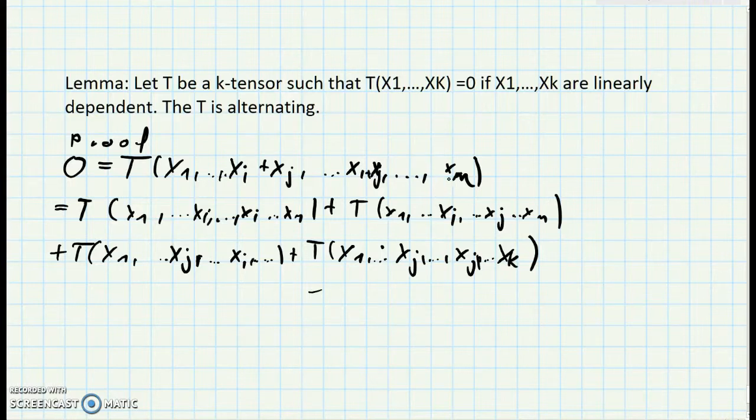Then we can decompose this by linearity and we get the following sum. We see that we have two summands where we have two equal entries: Xi and Xi here, and Xj and Xj here.